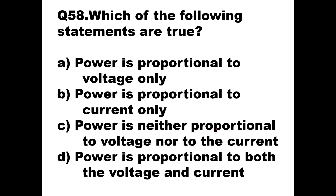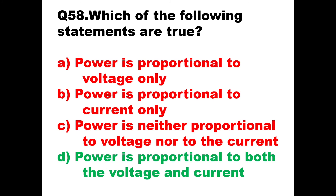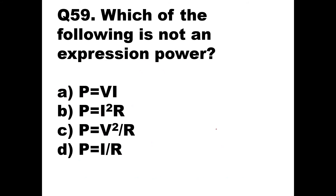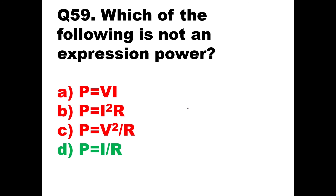Question 58: Which statement is true about power? Option A says power is proportional to voltage only, B says current only, C says neither — but since P = VI, power is proportional to both voltage and current. Option D is correct. Question 59: Which is not an expression for power? P = VI, P = V²/R, and P = I²R are all valid. P = I/R is wrong, so option D is the answer.